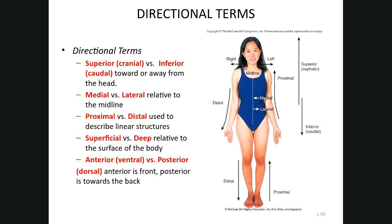Now we'll come to the directional terms, which are used to describe different structures in the body. There are a few of these terms that can be challenging. Medial and lateral are used to describe the position of a body structure in regards to the middle of the body, to the axis. Anything close to the axis is medial; anything further from the axis is lateral.